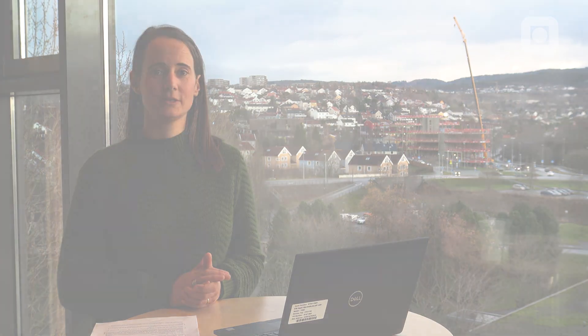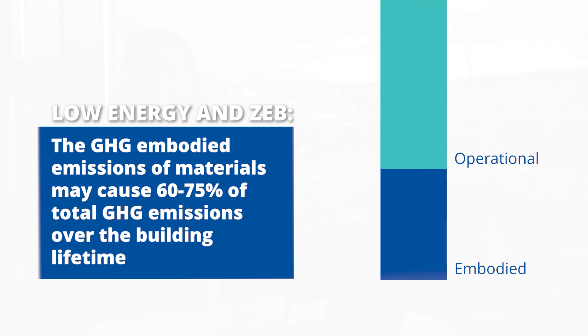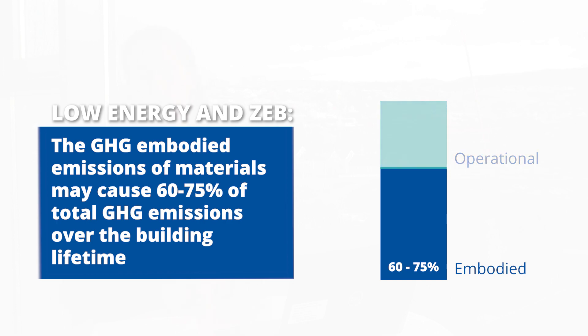What happens with Zero Emission Neighborhoods is that they use very low energy use standards, such as passive house standards, to build the building. The side effect of that is that when you reduce the energy use in the operational phase, the focus shifts from the operational to the construction phase. So what we want to do is to better understand what is happening in the construction phase of those Zero Emission Neighborhoods.